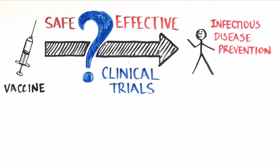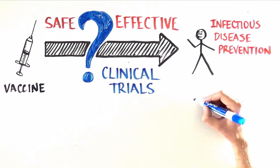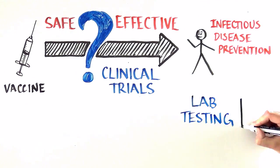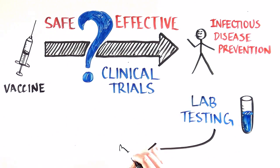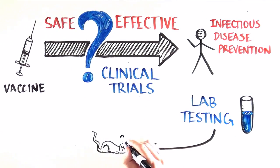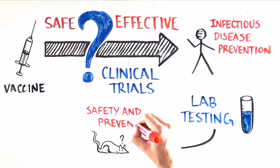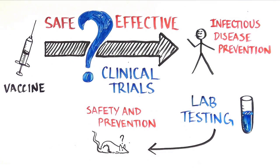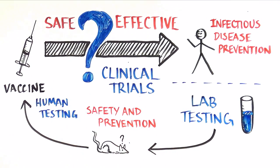The first thing to know is that a lot of testing is done before a vaccine ever gets tested in humans. There is a long process of development in the laboratory, and testing both for safety and for protection in animal studies. After we have a vaccine that looks both safe and promising in preventing infection in the laboratory, we begin testing in humans.